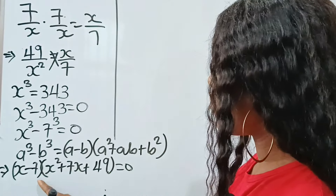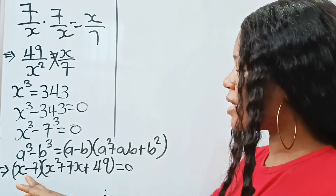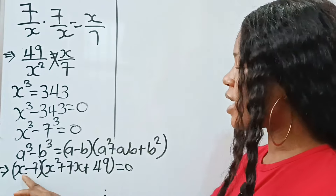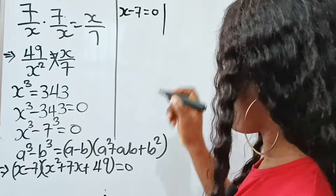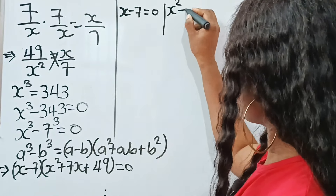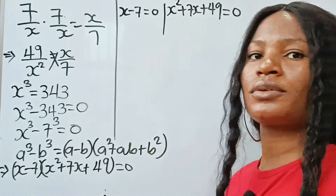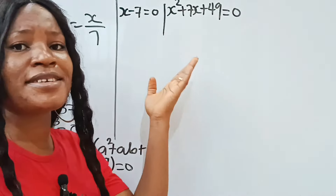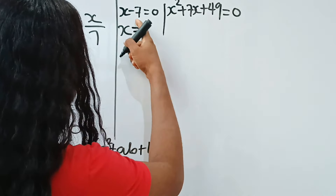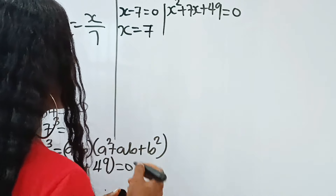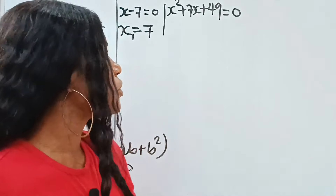When two brackets are equated to 0, it simply means either bracket is 0. So either x minus 7 equals 0, giving us x equals 7 as our first solution x₁, or x squared plus 7x plus 49 equals 0, which we solve next.